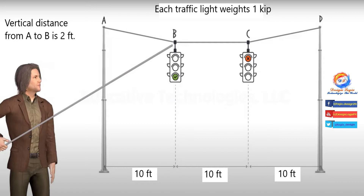Traffic lights having 1 kip load hang with cable supported at joints A and D. The horizontal distance between A to B, B to C, and C to D each equals 10 feet. The vertical distance between A to B equals 2 feet. We will find tension forces in cables AB, BC, and CD, then proceed to design the cable using AISC LRFD and AISC ASD codes.